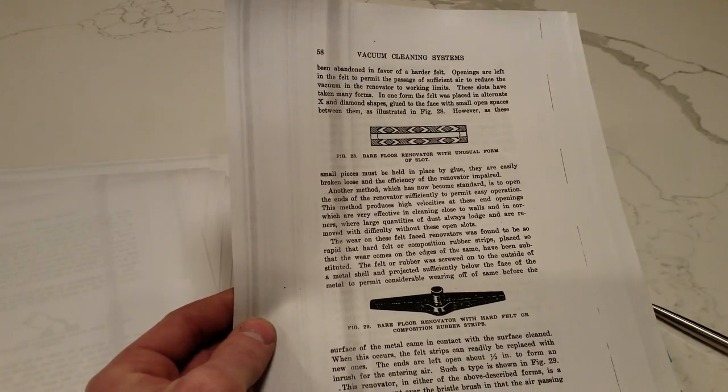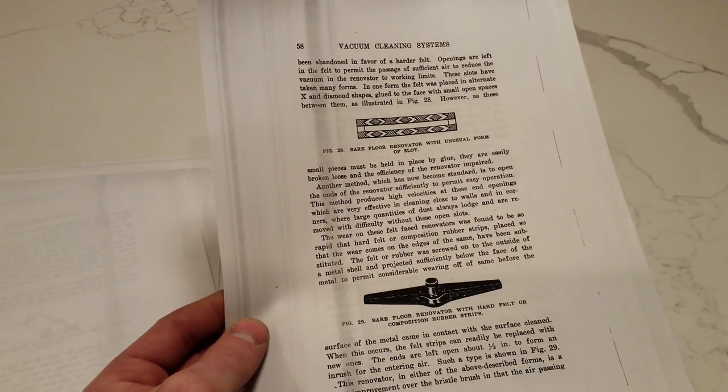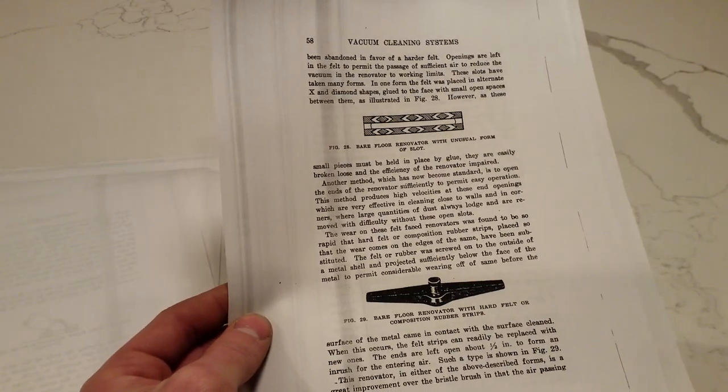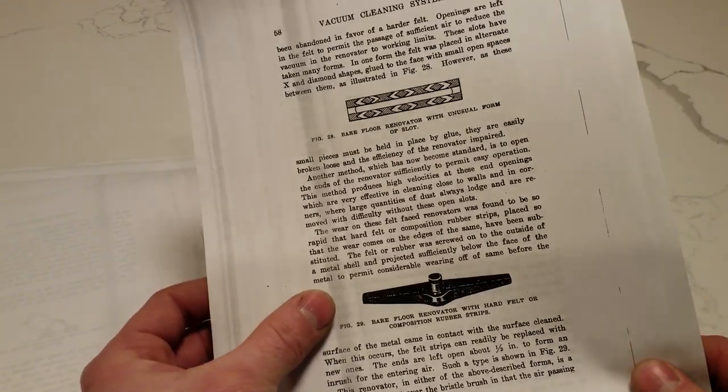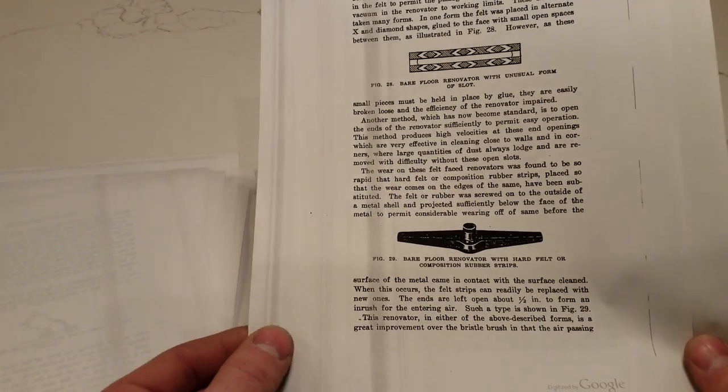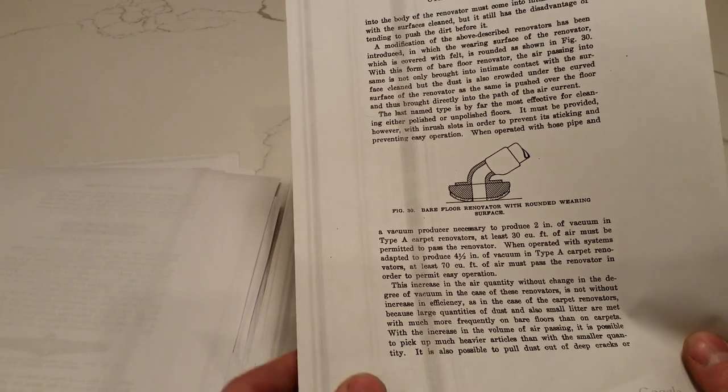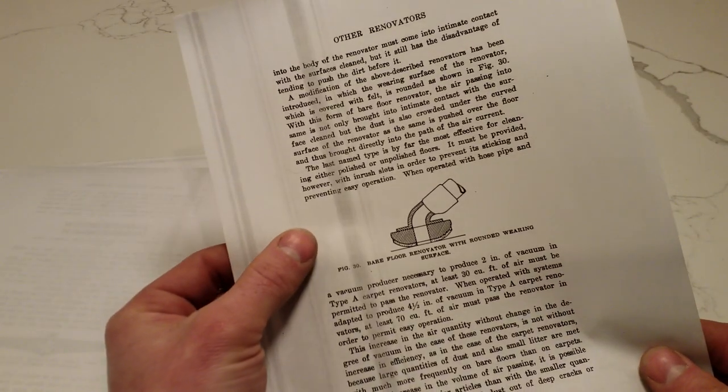And they tried felt with cutouts in it. This is similar to the Lindhaus bare floor tool that you can still get with the felt pad on it. I think that works pretty well. And then here was the, you can tell that's a Spencer tool. Hard felt or composition rubber strips. Bare floor renovator with rounded wearing surface. That would be like a filter queen felt pad today.